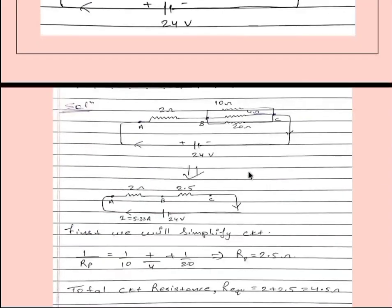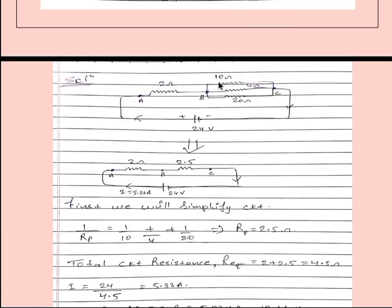Now the last question, question number three: Find the potential difference between AB and BC. First of all we will try to simplify this circuit.